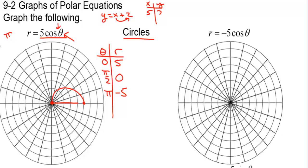If we plotted a whole bunch of points, it would start forming a circle. We just have to know it's a circle. At pi, we're at negative 5, which means along the angle pi we go in the opposite direction — that puts us at negative 5 right here. So there's the other half of the circle. This circle is on the right side of x, because on the unit circle, cosine is x.